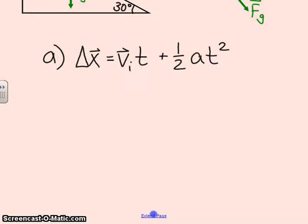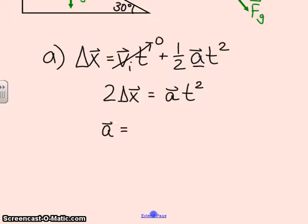These are all vectors. We know v initial is zero, so I can cross that out. Then I want to solve for a. First I'll multiply both sides by 2, then divide both sides by t squared. So acceleration is 2 delta x divided by t squared.